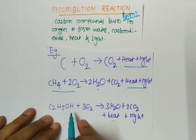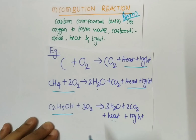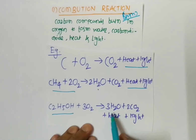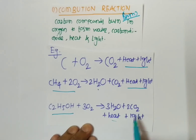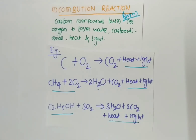Another example: C2H5OH, that is ethanol, when it reacts with O2 — meaning the burning of ethanol — you get water, carbon dioxide, heat and light. So this is the combustion reaction — burning is the first property, that is the combustion reaction.